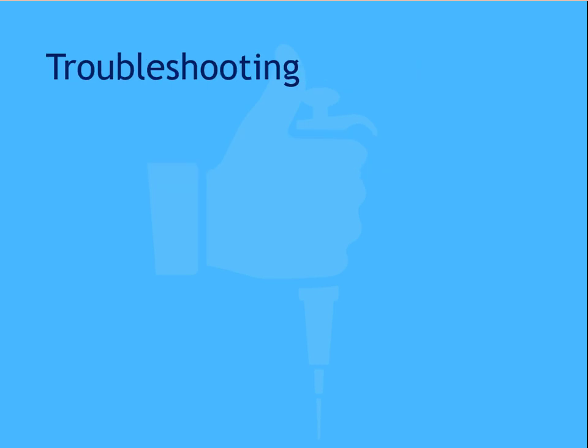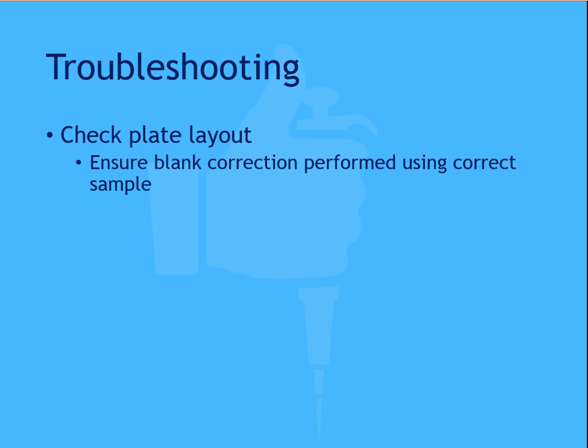To begin troubleshooting, the first thing to check is that the plate layout matches the layout currently being used in your assay. If your layout does not include a blank, be sure the blank correction step is not being performed using a sample erroneously labeled as a blank. If the layout is correct, review the assay protocol for errors or potential contamination.